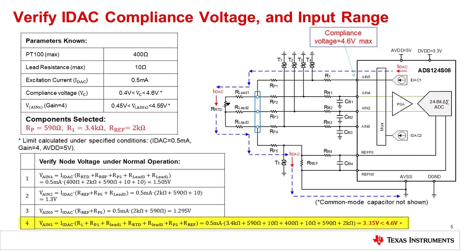In step 4, the voltage on AN5 is calculated — this is the compliance voltage of the IDAC current source. In this example, the maximum voltage is 3.35 volts, which is less than the 4.6 volt compliance limit. Therefore, all the input signals and IDAC compliance meet the ADS124S08 datasheet requirements. This step isn't really part of the input protection calculation, but is required for device functionality. Note that if the compliance requirements didn't exist, it would be easy to design a robust protection circuit as the resistors could be increased for better input protection.